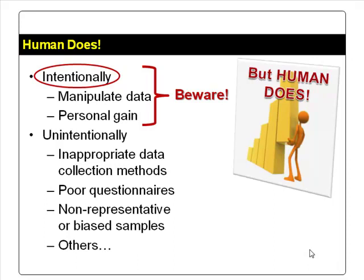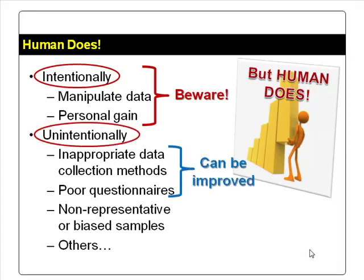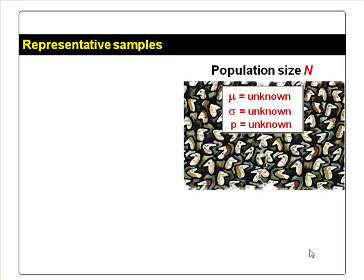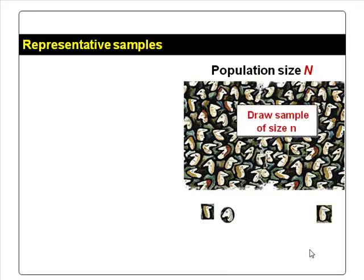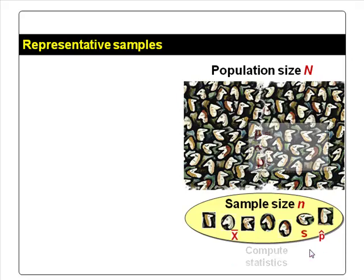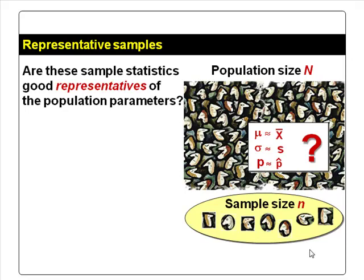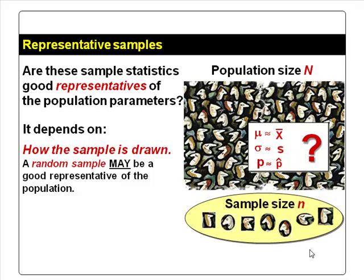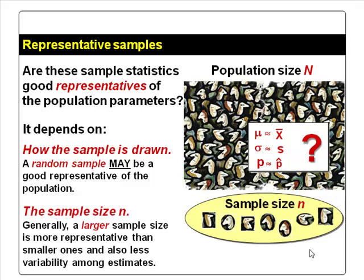We have to be aware of people who intentionally manipulate data to mislead, and be more careful and critical when we look at statistics. The most important issue is that we want a representative sample. In a population with unknown parameters, we draw a sample of size n, compute the sample statistics, and use them as estimates of the population parameters. Whether these statistics are good representatives generally depends on two things: how the sample is drawn from the population, and the sample size n — larger sample sizes give better estimates and less variability among estimates.